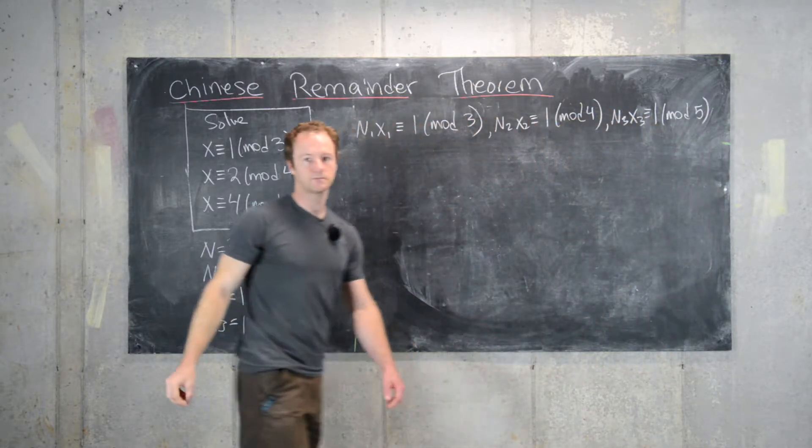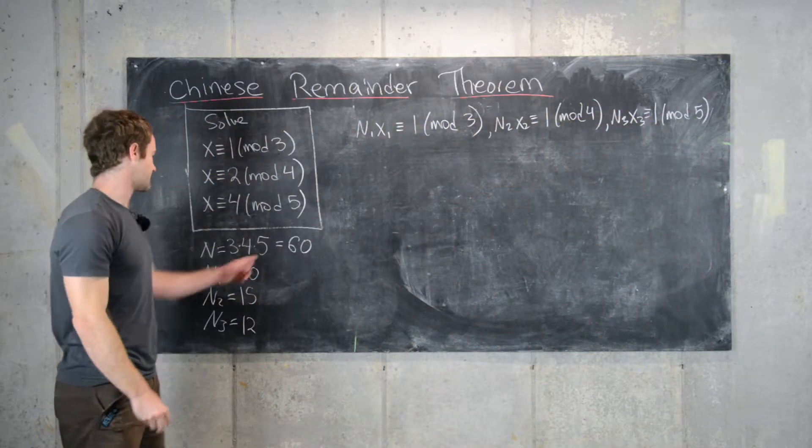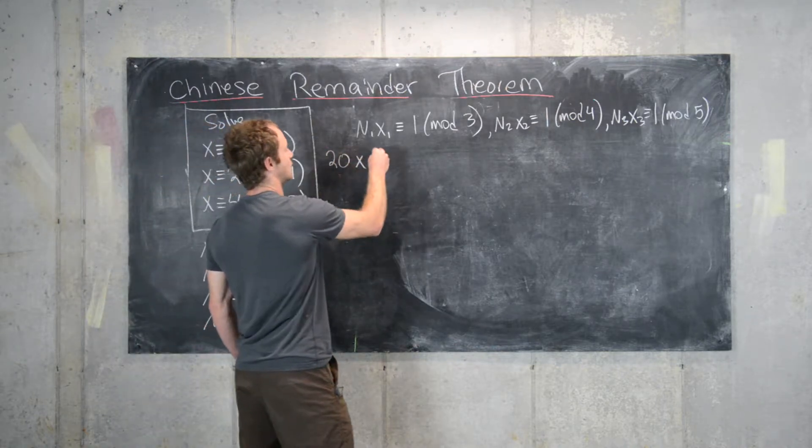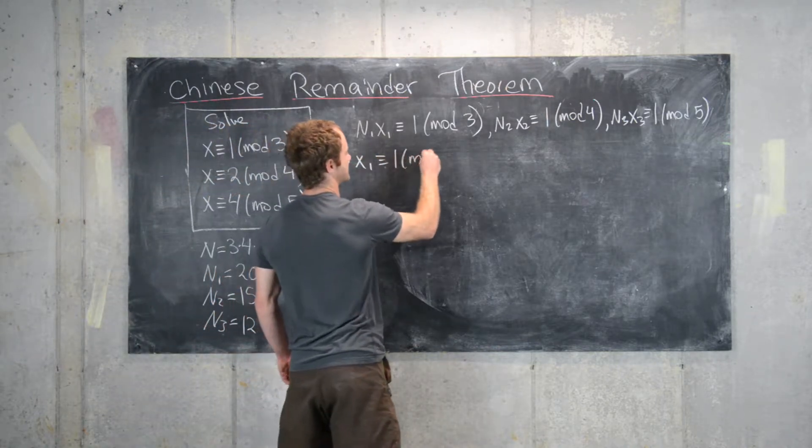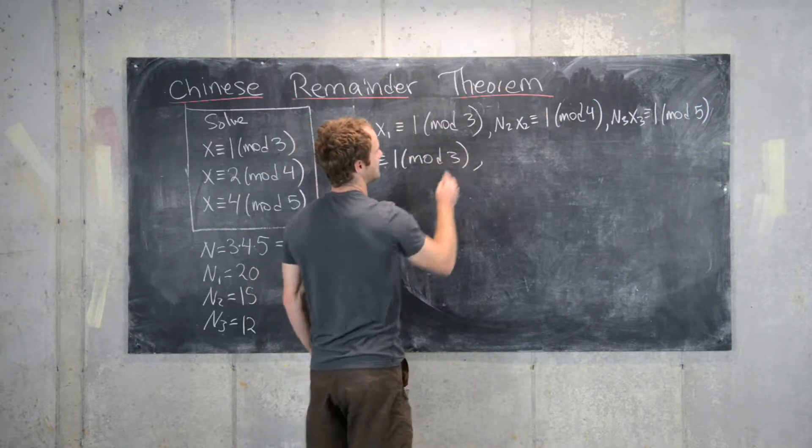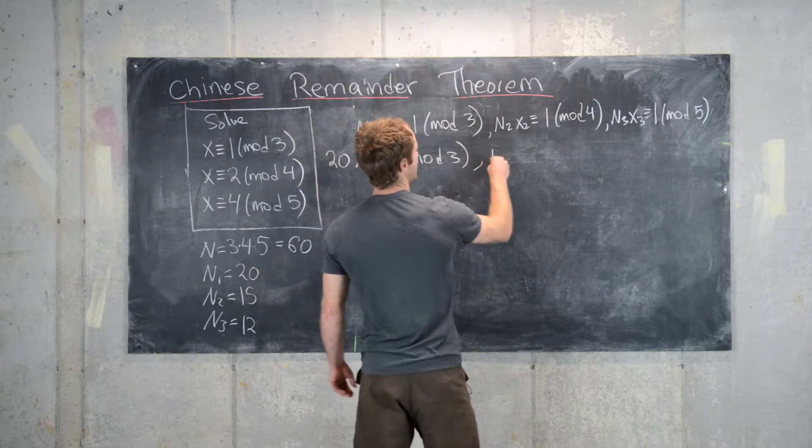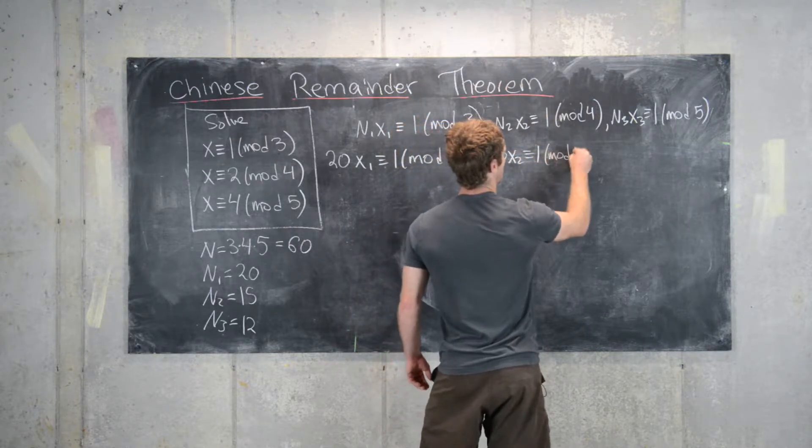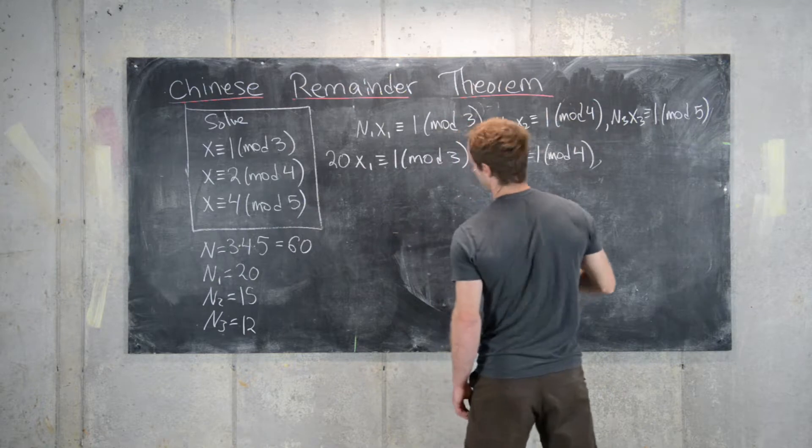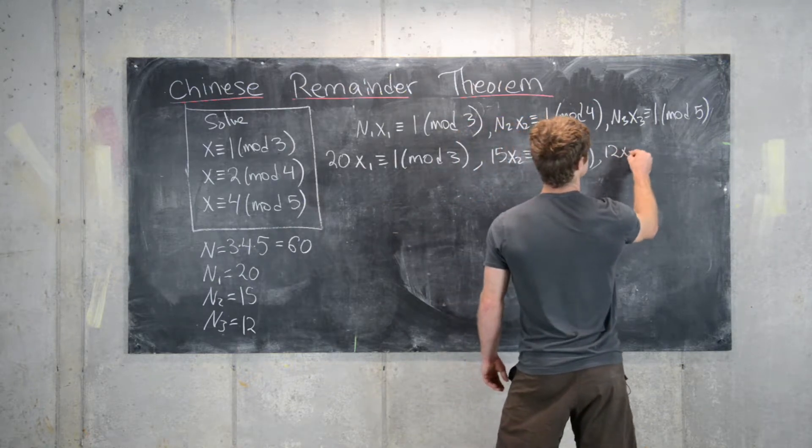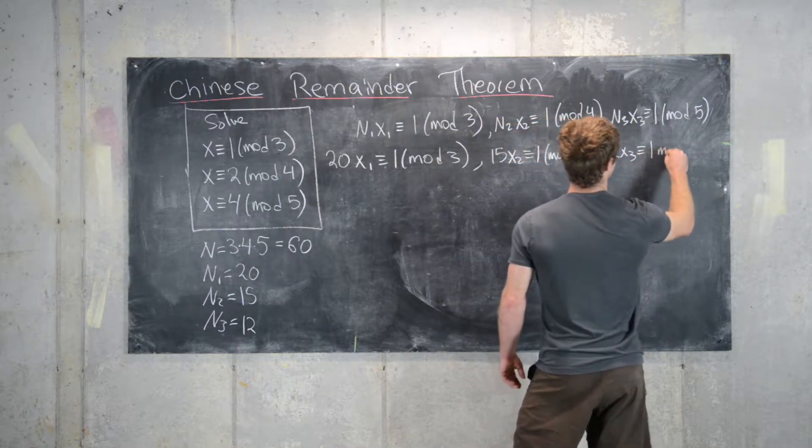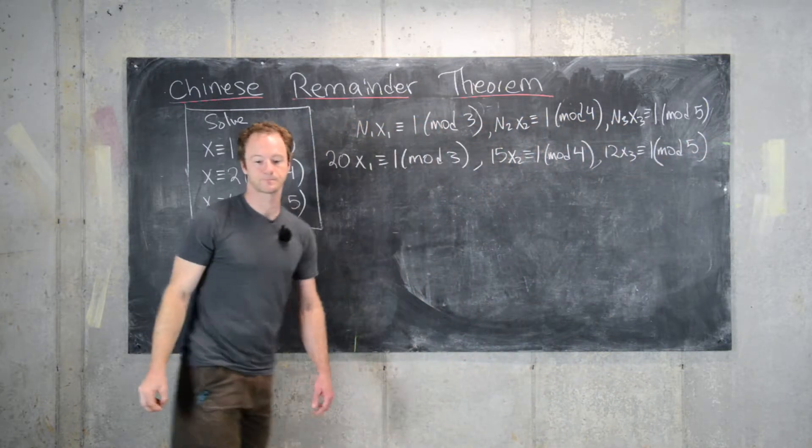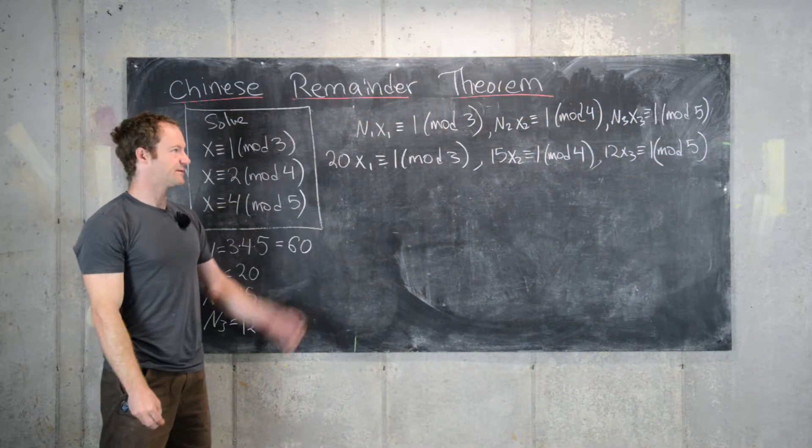So that'll be our next step. In other words, we want to solve 20x1 is congruent to 1 mod 3, we want to solve 15x2 is congruent to 1 mod 4, and finally we want to solve 12x3 is congruent to 1 mod 5.